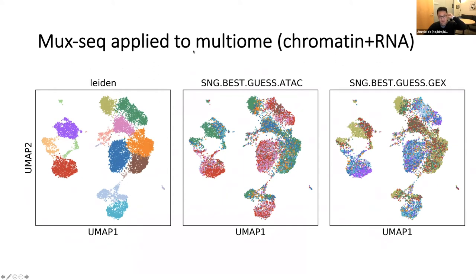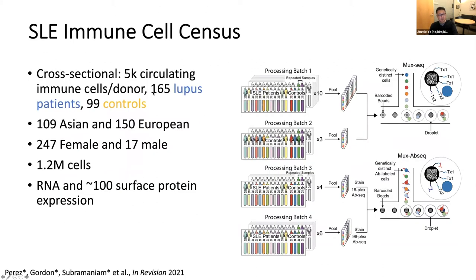Since developing Demuxlet, we've now applied it to multiome datasets — simultaneously profiling chromatin accessibility as well as gene expression from the same cells. On the left is a projection of the multimodal data in two dimensions, with cells colored by cell type from circulation. The panels on the right show multiplexing of cells to individuals using chromatin accessibility data alone (ATAC data) and using gene expression data alone — both pieces of information contain genetic information, so we can do demultiplexing with either and basically get the same result.